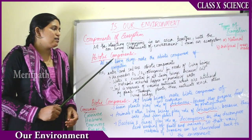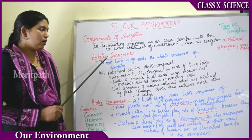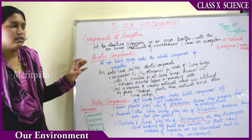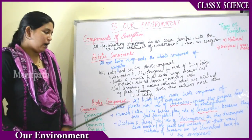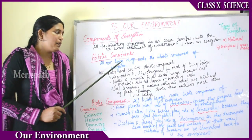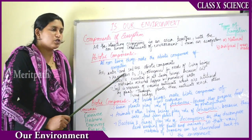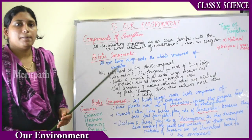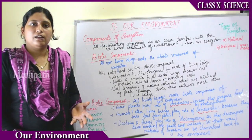The components of an ecosystem are of two types: abiotic components and biotic components. Briefly, abiotic components are non-living things and biotic components are living things. All the non-living things make up the abiotic components of an ecosystem.